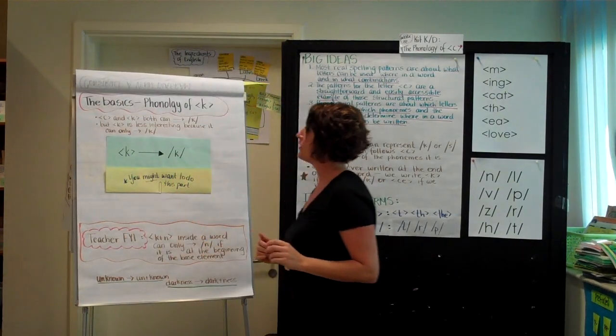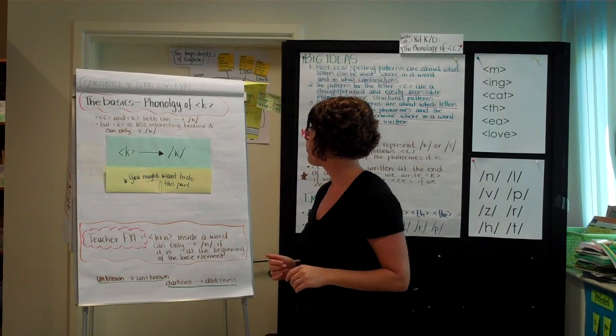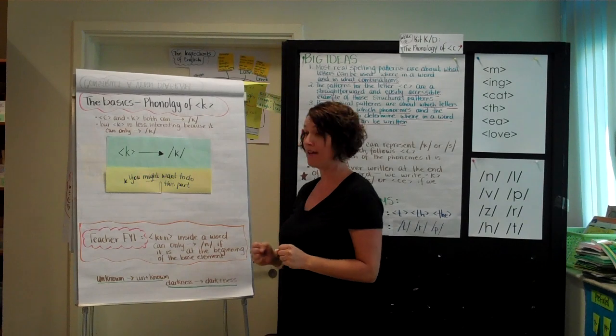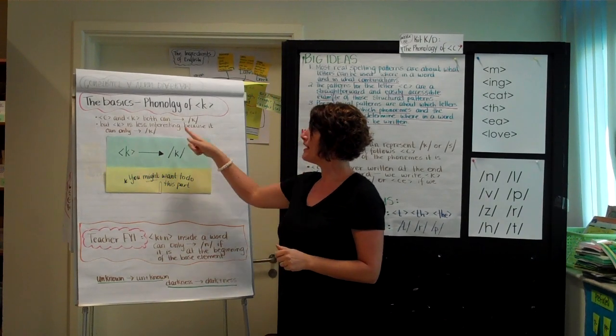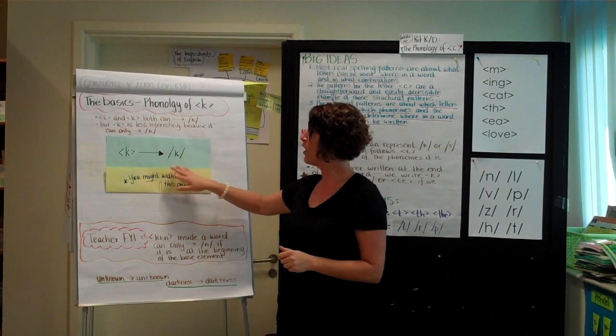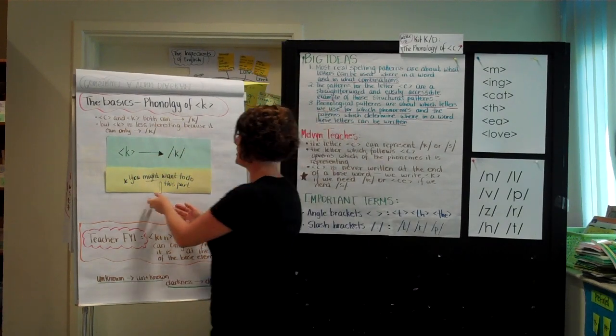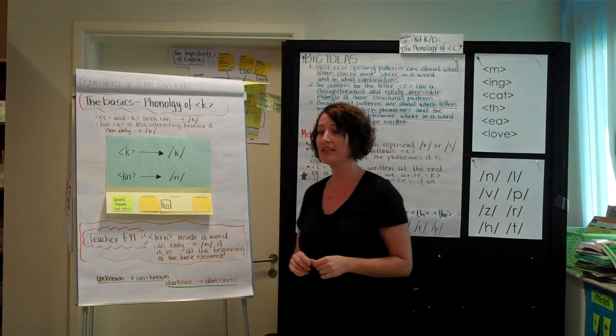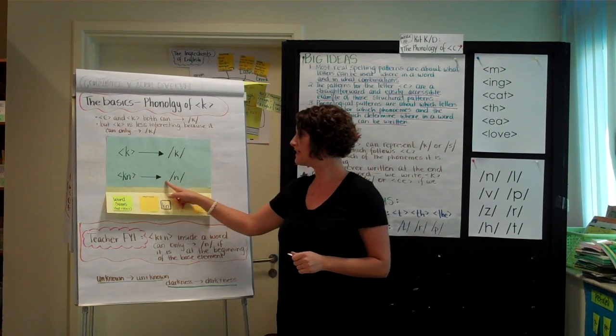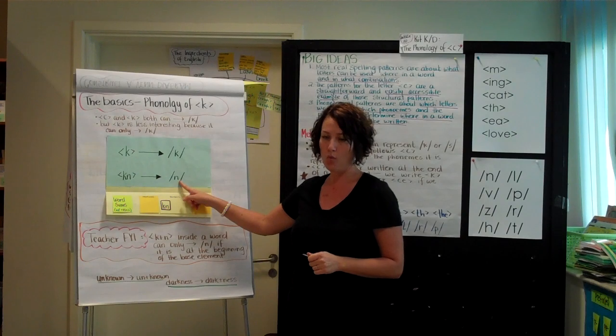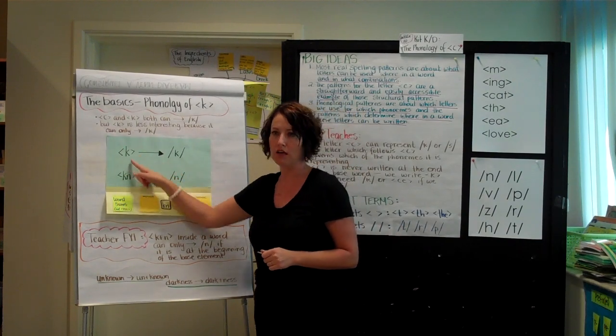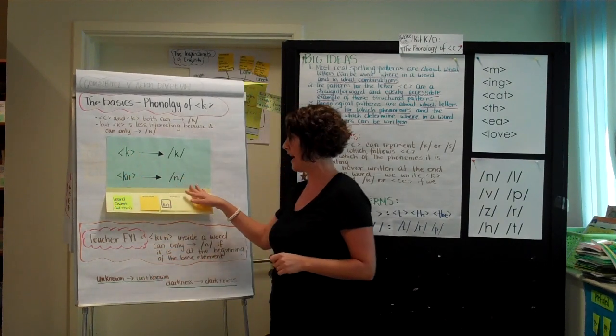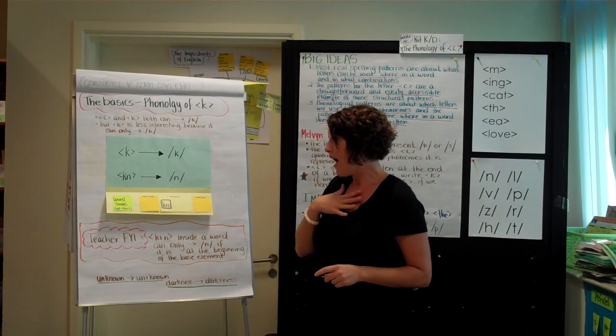Then we get into looking at the basics of the phonology of the letter K. Because we know that C and K can both make the /k/ sound. But K is less interesting because K can only make the /k/ sound. Melvin suggests that after you get that sorted, you could move into looking at the digraph K-N, which makes the /n/ sound. That's crazy, right? Because there's a K and there's a K and now there's an N. So this is good talk about how these letters perform duties or actions.